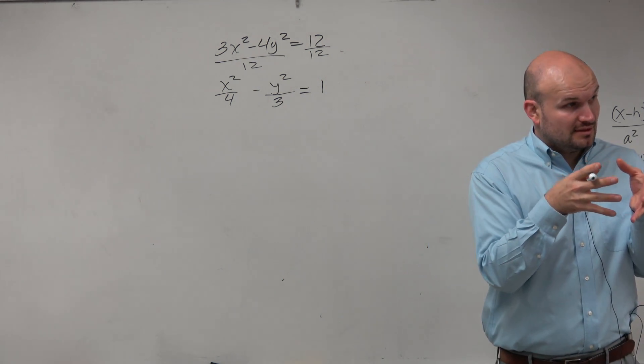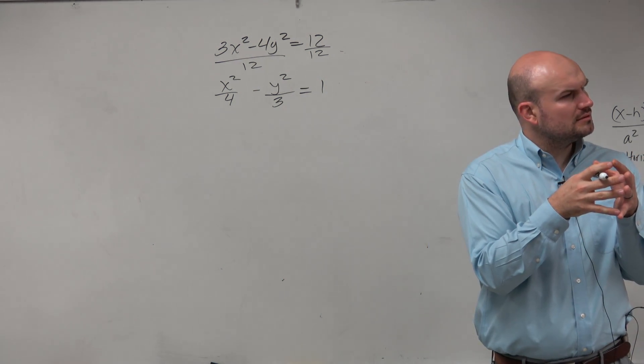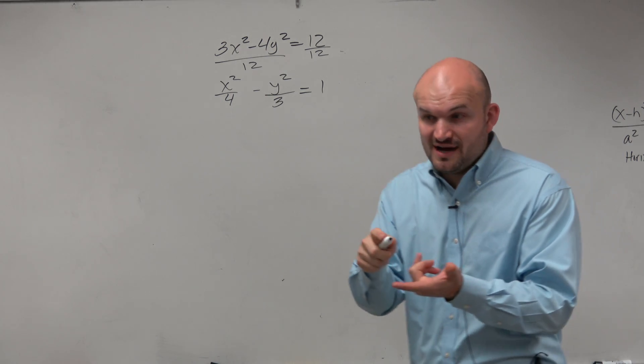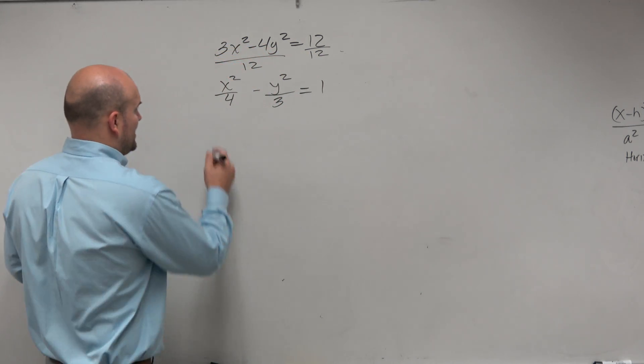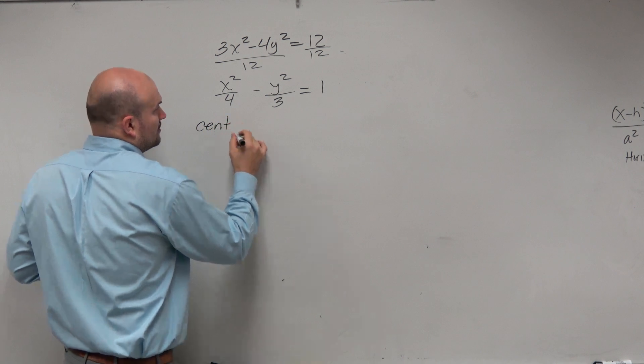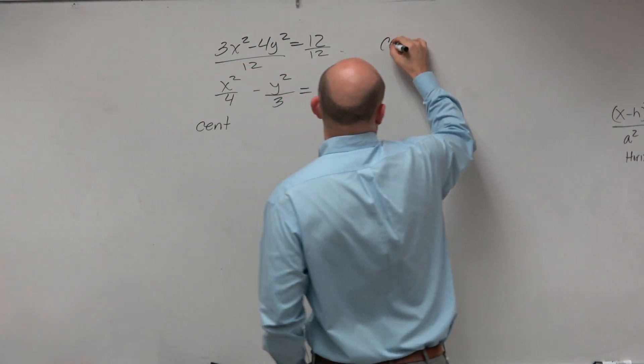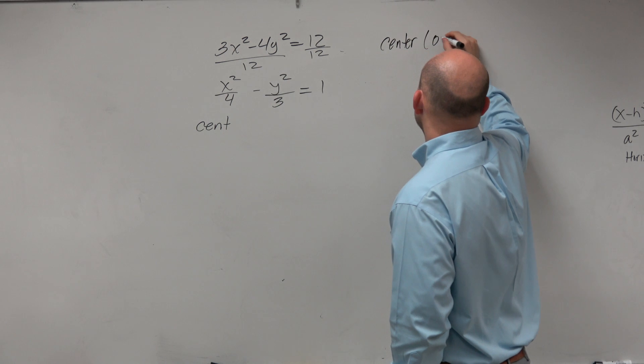Now immediately, just like we did with an ellipse, we want to identify the center and a and b. Well, the center is rather simple. The center is going to be at 0 comma 0.